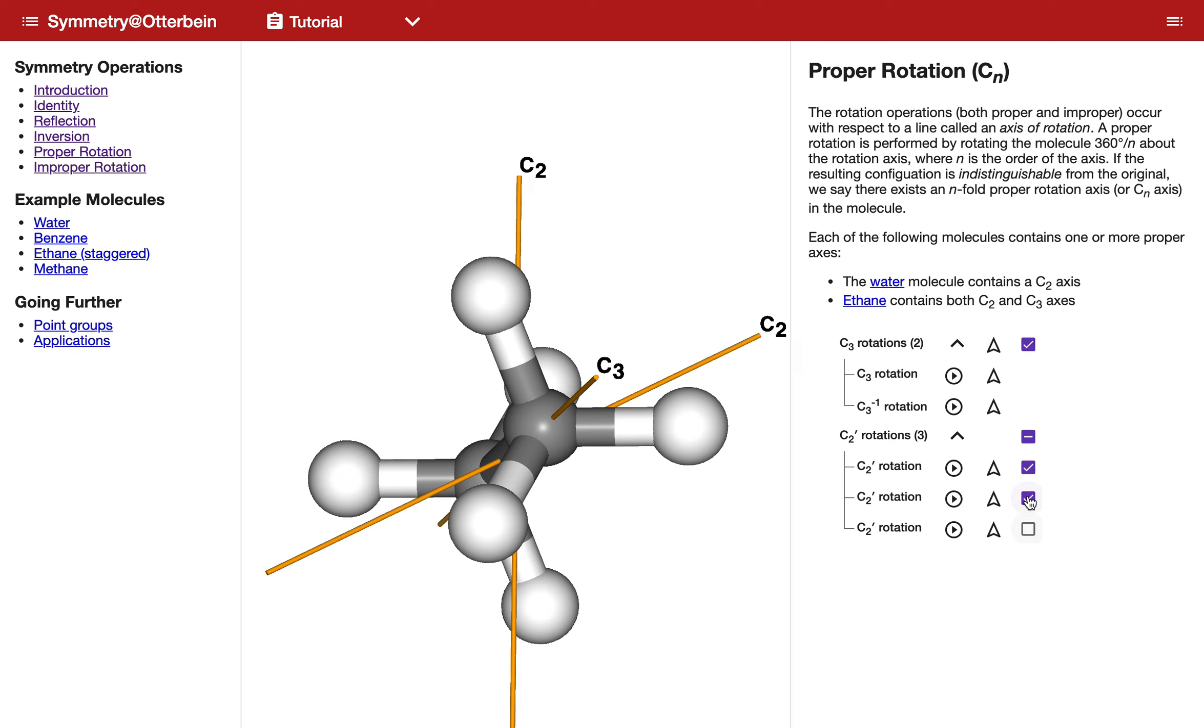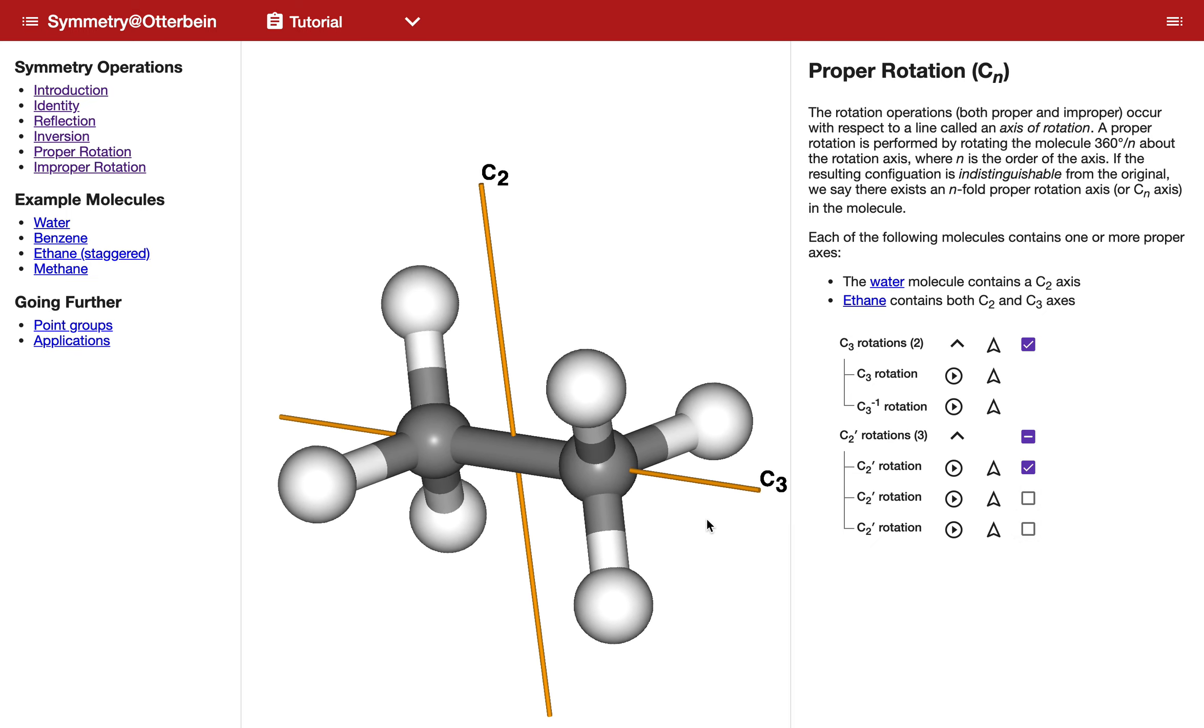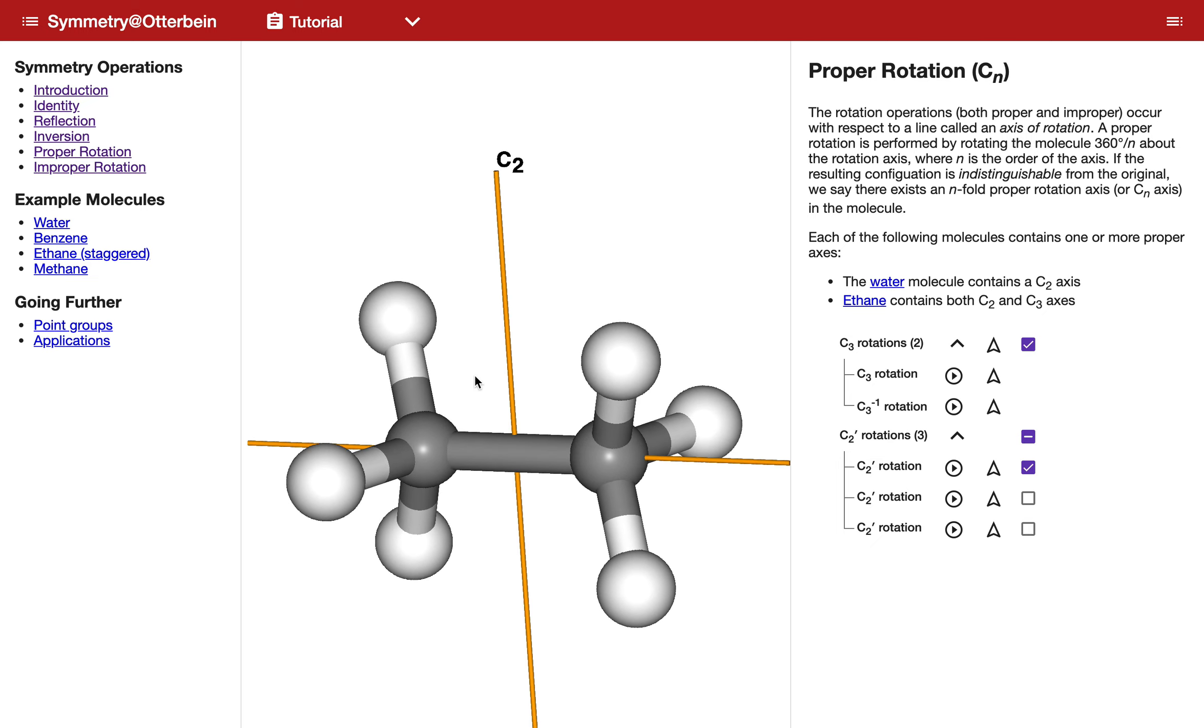You can see that they do so at these angles. Now I'm going to get rid of a couple of these because I want to highlight just one at a time. If I were to animate its operation, you can see there it is. The molecule is rotating about that axis, matching this hydrogen up with this hydrogen, and this with this one, and this one with this one.